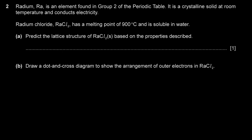Question 2: Radium is an element in group 2. It is a crystalline solid at room temperature and conducts electricity. Radium chloride has a melting point of 900°C and is soluble in water. Part A asks us to predict the lattice structure of radium chloride. It has a high melting point, is soluble in water, and is a metal bonded to a non-metal — so this is an ionic compound. The lattice structure is a giant ionic lattice.